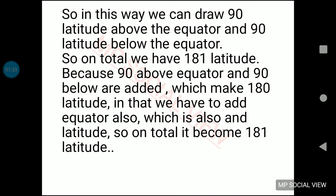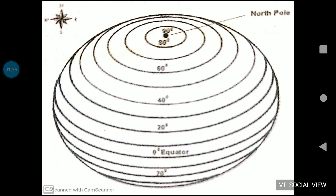As you can see in the latitudinal picture, this is how latitudes are drawn on the earth. First, the equator is drawn, then 90 latitudes are drawn above the equator and 90 latitudes below the equator. All those latitudes are not shown to you because if we draw all 90 above and 90 below, it will become unclear, confusing, and complicated. It is difficult to draw all 90 latitudes on the globe, but in reality they are there.